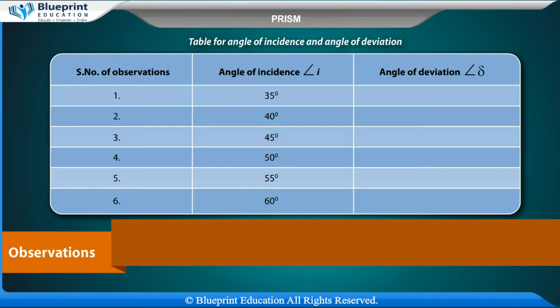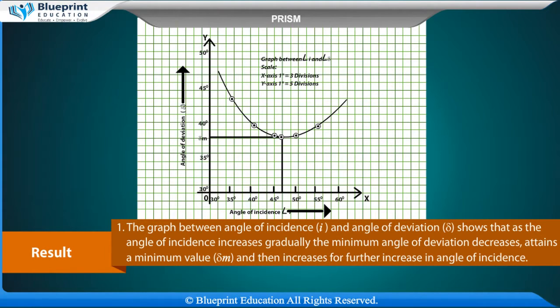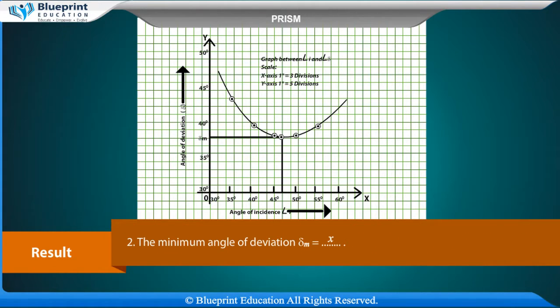Result: The graph between angle of incidence I and angle of deviation delta shows that as the angle of incidence increases gradually, the minimum angle of deviation decreases, attains a minimum value delta M, and then increases for further increase in angle of incidence. The minimum angle of deviation delta M is equal to x. The refractive index of the material of the prism mu is equal to x.